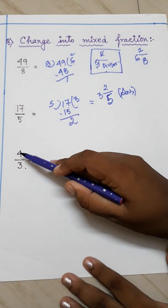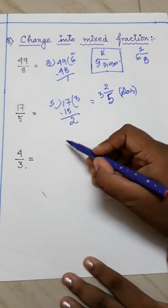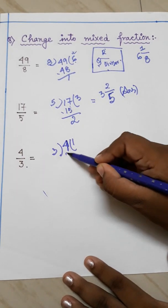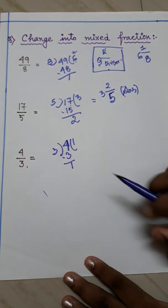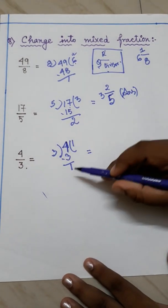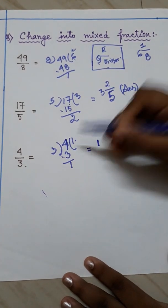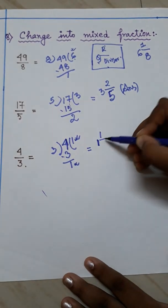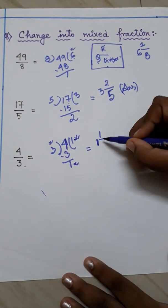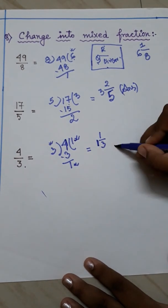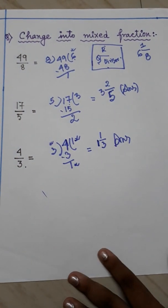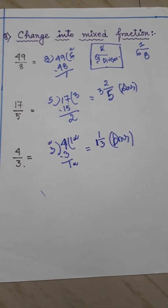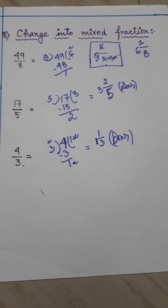The third example is 4 by 3. We divide 4 by 3. Since 3 times 1 is 3, the quotient is 1 and the remainder is 1. Applying the formula, the answer is 1 whole 1 by 3. In this way any improper fraction can be changed into a mixed fraction.